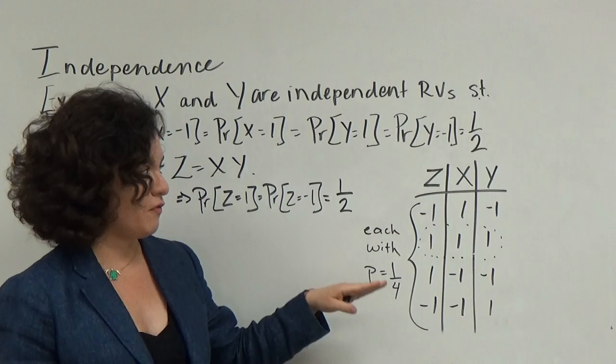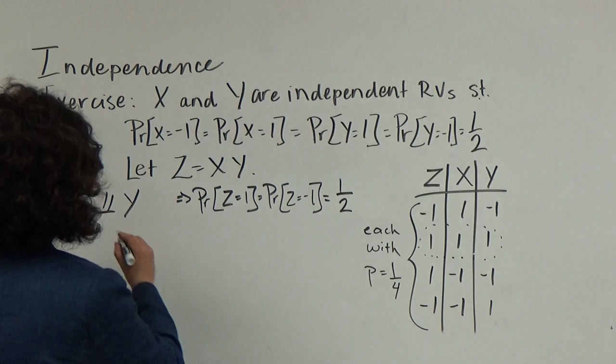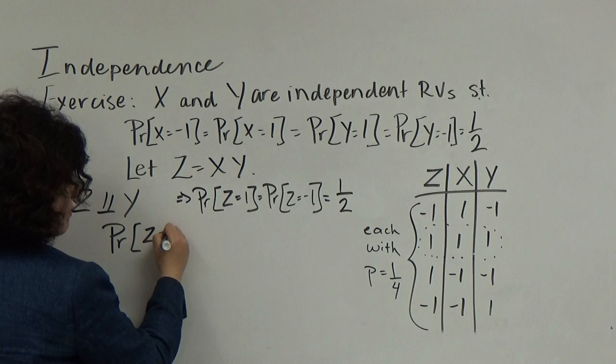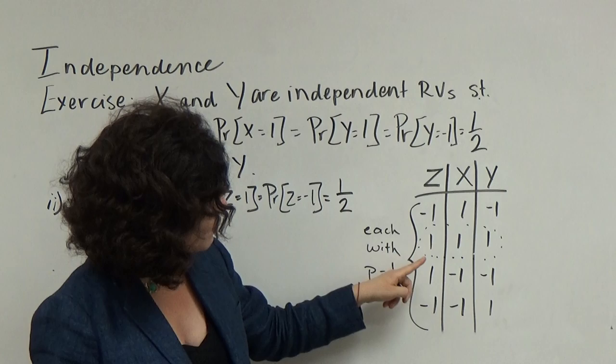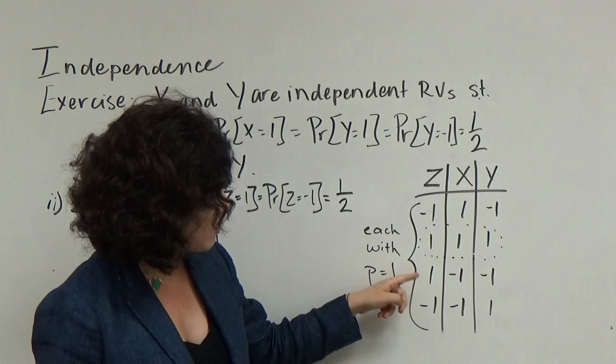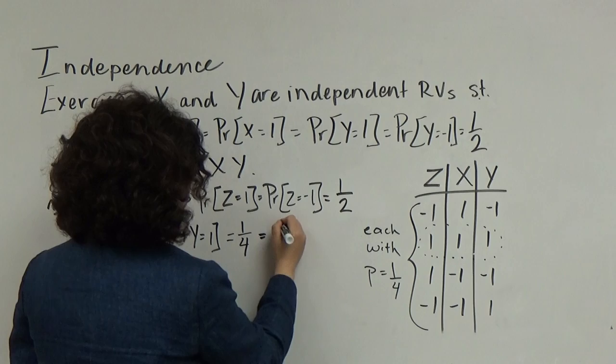This chart is also very useful for showing that these random variables are not independent. Now we want to consider the specific event that z equals 1 and y equals 1. I've circled this event in the chart — there is only one outcome where y equals 1 and z equals 1, so we know this probability is equal to 1/4, which equals 1/2 times 1/2.